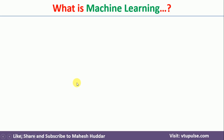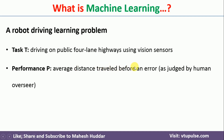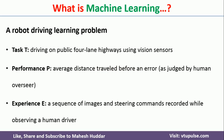Let us consider one more example: a robot driving learning problem. The task is driving on a public four-lane highway using vision sensors. The performance is the average distance travelled before the robot makes an error. The experience is a sequence of images and steering commands recorded while observing a human driver. During training, the human driver drives the vehicle — what he does when he comes across an obstacle, when there is no obstacle he increases speed, if something comes in front he may go left or right — all those things are noted and with that the robot learns to drive.